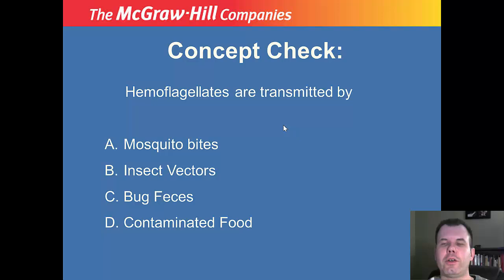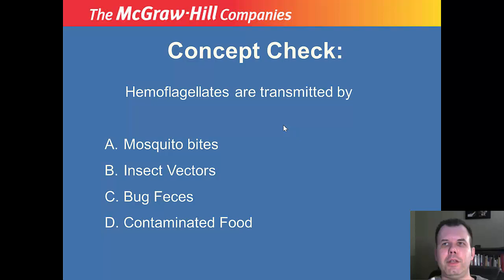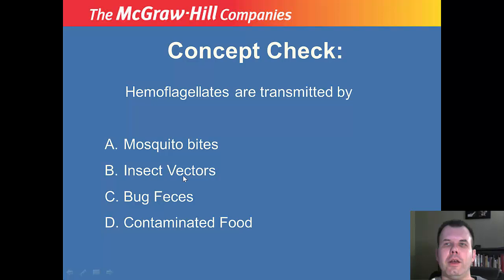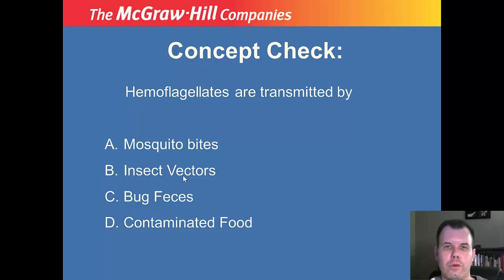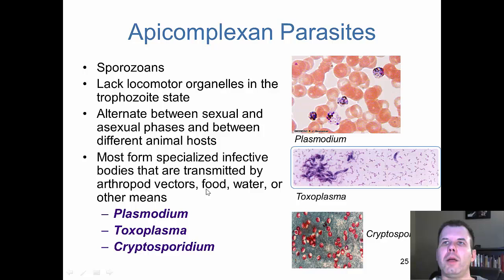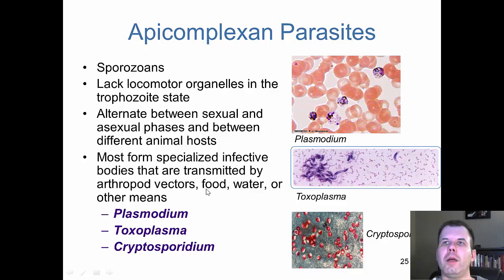Quick question: how are hemoflagellates transmitted — by mosquito bites, insect vectors, bug feces, or contaminated food? The answer is insect vectors. Trypanosoma brucei is spread by the tsetse fly, and Trypanosoma cruzi (Chagas) is spread by the kissing bug — and technically also through bug feces, so that answer is also accepted.